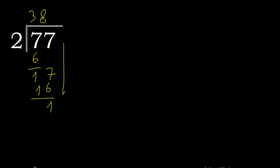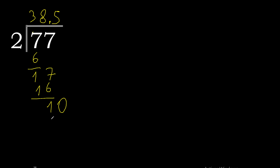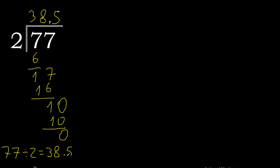There is no number that goes down, therefore complete with 0 and here with a decimal point. 2 multiplied by 6 is 12, excessive. Multiplied by 5 is 10. 10 minus 10 is 0. Therefore finish. 77 divided by 2 equals 38.5.